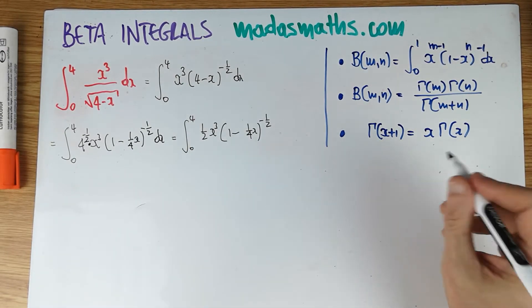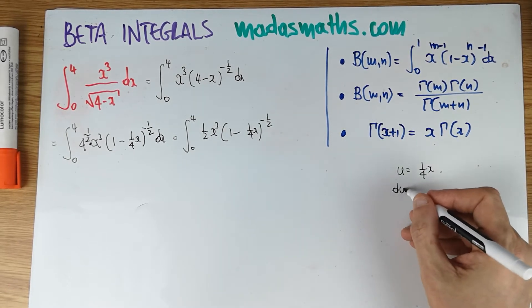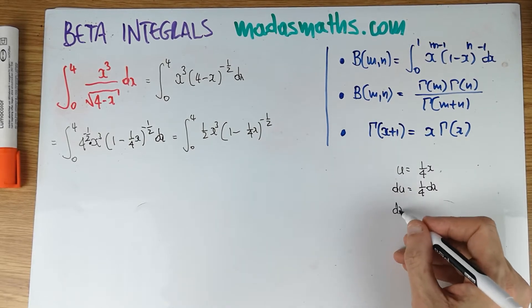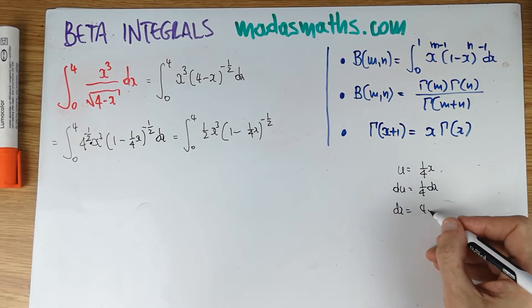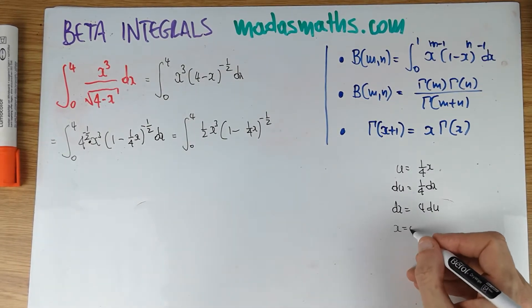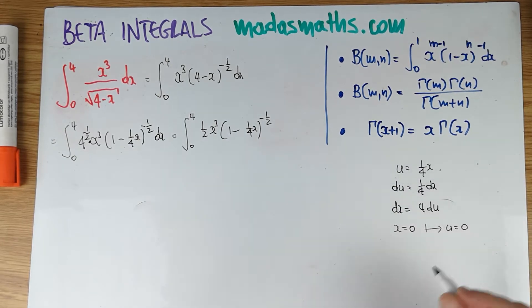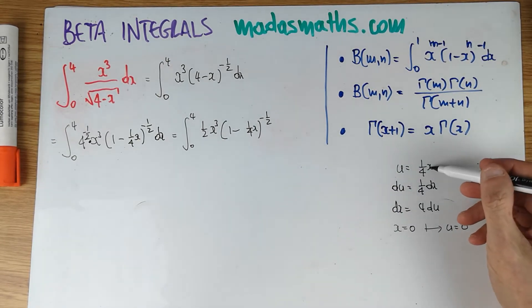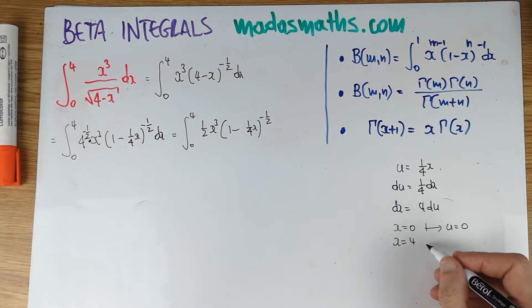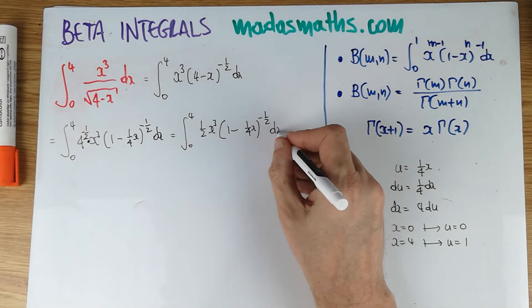Substitution. So let's say we use u. u is a quarter x, du is a quarter dx, or dx is 4 du's. And the limits, when x is equal to 0, u will be also 0. And when x is equal to 4, quarter of 4 is 1. So the limits as we were expecting perhaps change now.